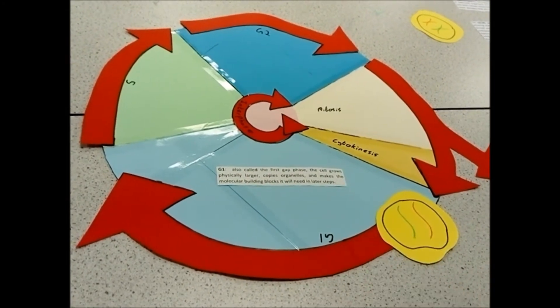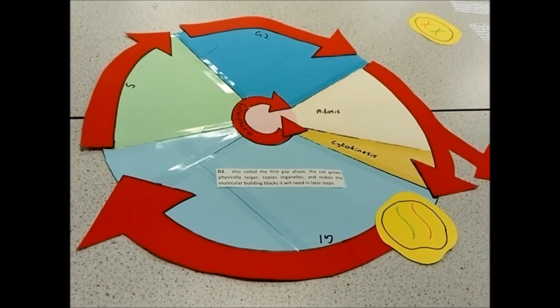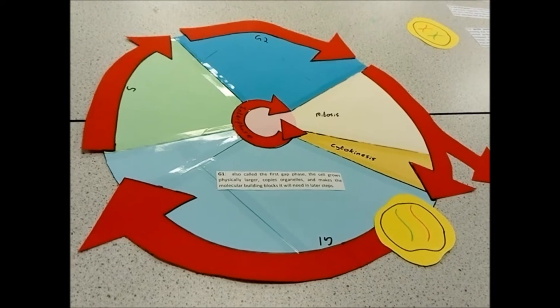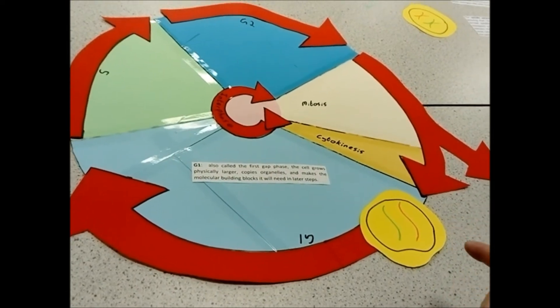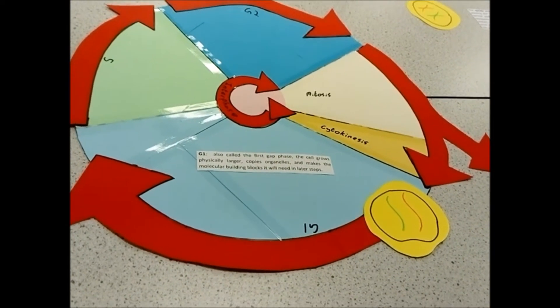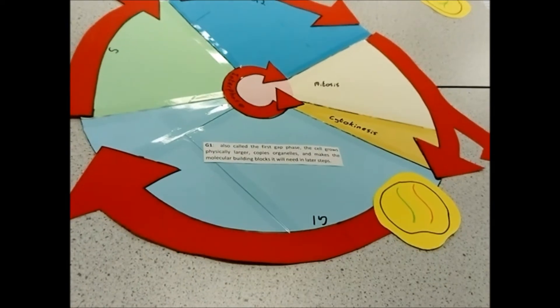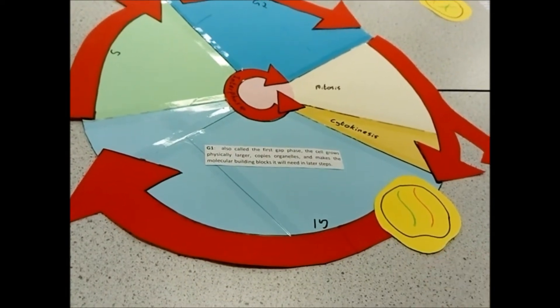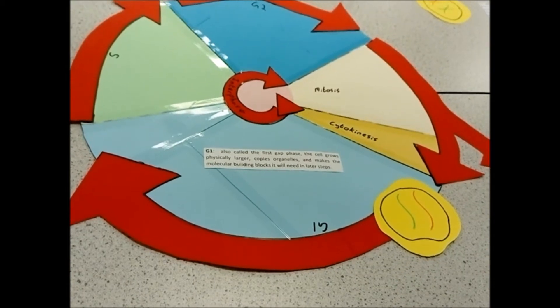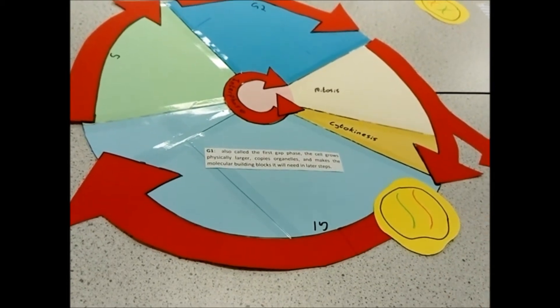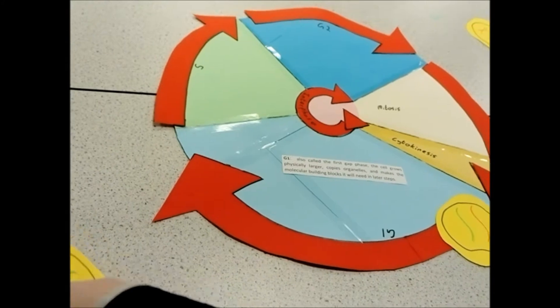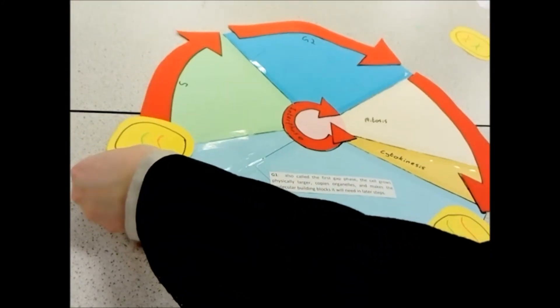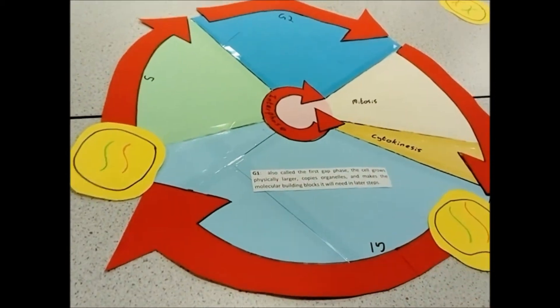This is where all of your large structures are copied, so your organelles are duplicated, it's where you're making sure that you've got enough phospholipids produced. It's where all those little building blocks that are required are produced. At the end of G1 phase, you've not duplicated any of your chromosomes, most importantly. So, you still have the same number of chromosomes.